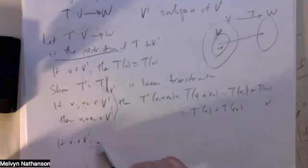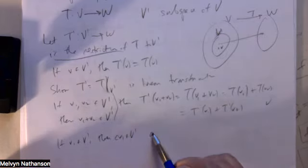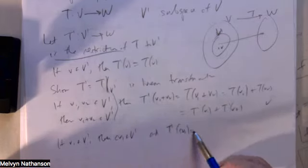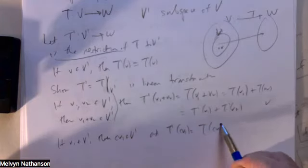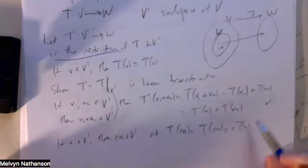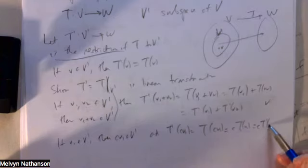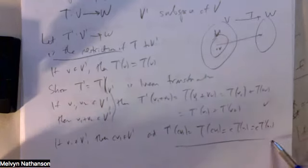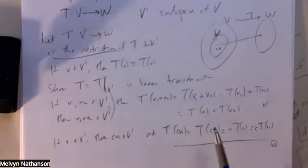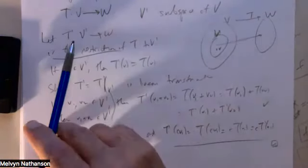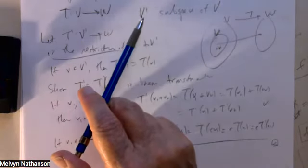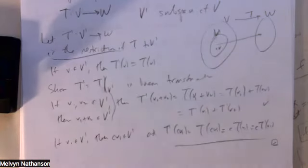And if V1 is in V prime, then any scalar times V1 is also in V prime. T prime of cV1 equals T of cV1, but T is linear, so this is c times T of V1, which equals c times T prime of V1. So the second condition for linear transformation is satisfied. Therefore, the restriction of T to a subspace of V is still a linear transformation.